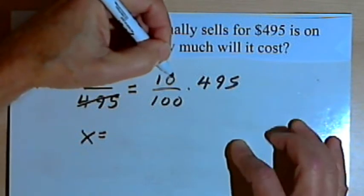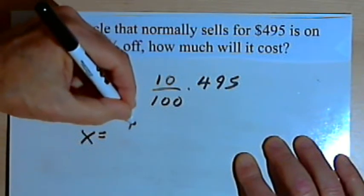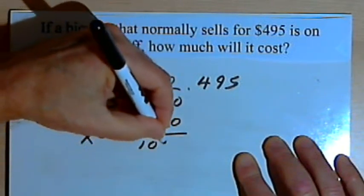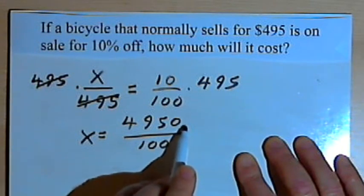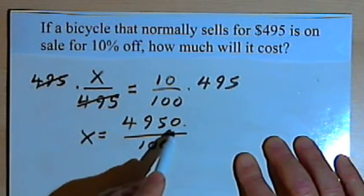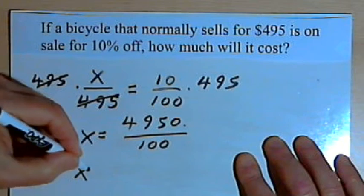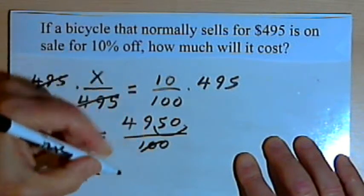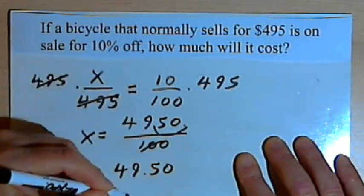Then I've got to work with the fraction on the right, so I've got 10 times 495, that's 4,950. I want to divide that by 100, and all I have to do is take the decimal point at the end of 4950, move it two places to the left, and that would divide it by 100. So I'm going to have x equals 49 dollars and 50 cents. So that's the discount.